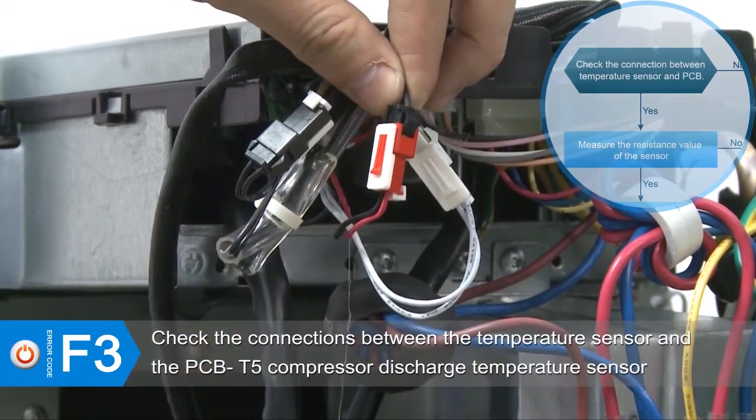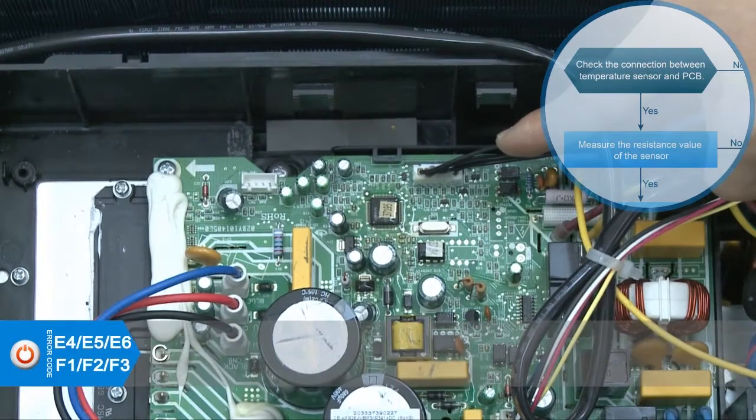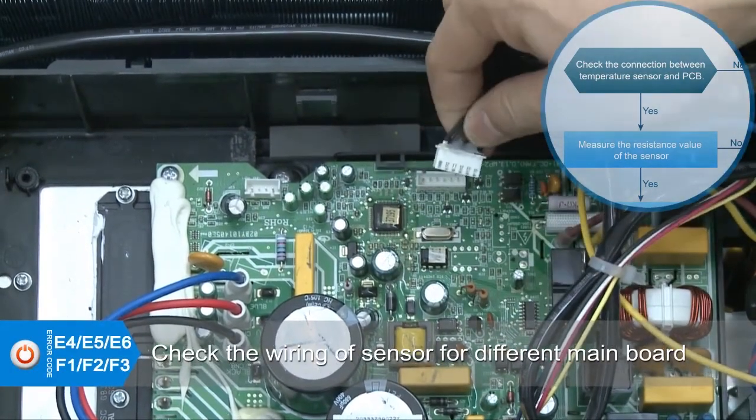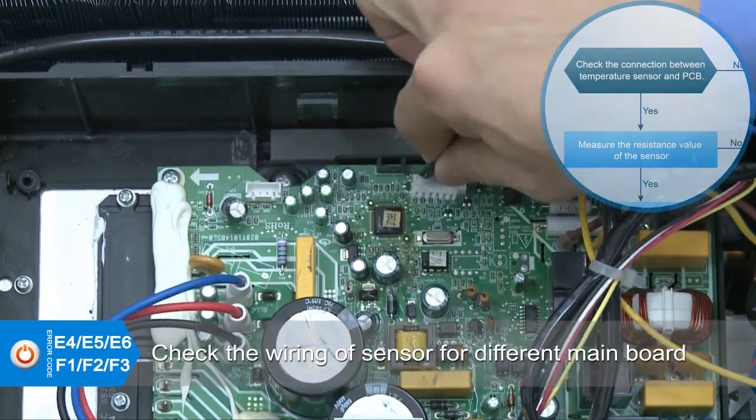Check the wiring of sensor for different main board. This structure is T3, T4, T5 sensors being integrated onto a sub-patch.